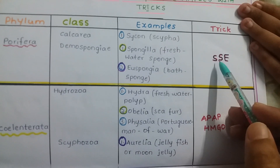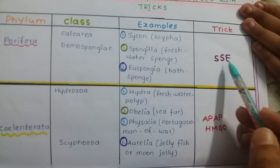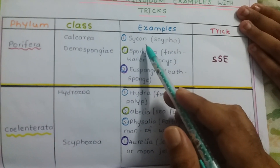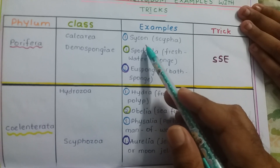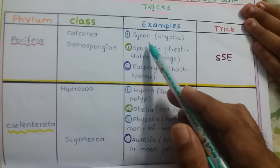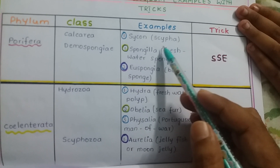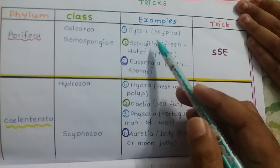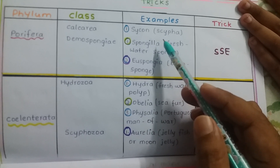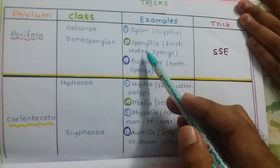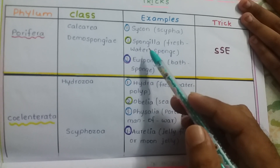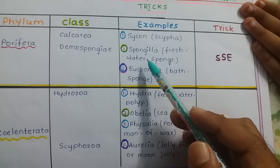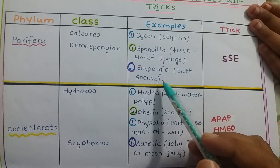For Sycon, you can remember it as a syphon — Sycon. And Scypha: he is speaking over Skype, so Scypha sounds like Skype. Next, Spongilla — 'jilla' means district. Your district people require fresh water to drink, so Spongilla is the freshwater sponge.